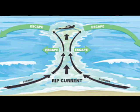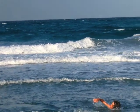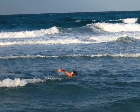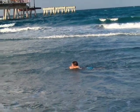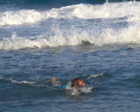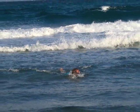Rip currents are the leading surf hazard for all beachgoers. They are particularly dangerous for weak or non-swimmers. Rip current speeds are typically 1 to 2 feet per second. However, speeds as high as 8 feet per second have been measured. This is faster than an Olympic swimmer can sprint. Rip currents can sweep even the strongest swimmer out to sea.